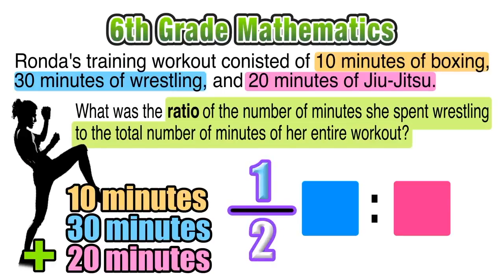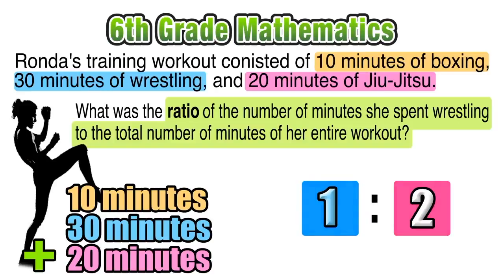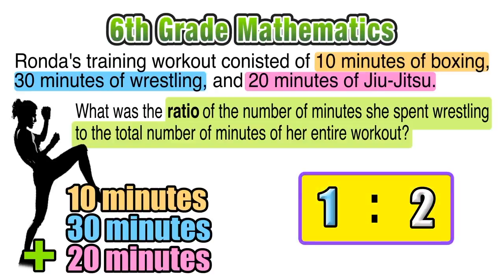30 over 60 simplifies to 1 over 2 — one half — because 30 is one half of 60. That should make sense because 60 minutes represents one hour, and we call a period of 30 minutes one half hour. So we can conclude that our ratio is 1 to 2. For every two minutes that she spent working out, one of those minutes consisted of practicing wrestling.